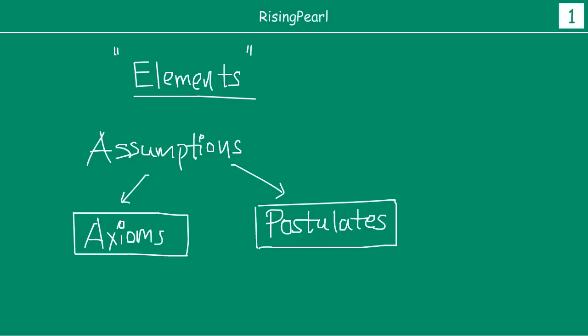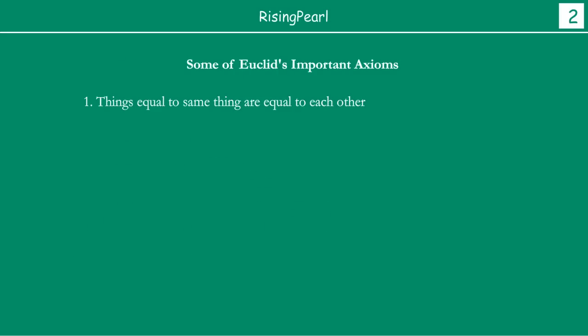Let's talk about some of the important axioms that Euclid outlined. The first one that he said was: things equal to the same thing are equal to each other. As we go through all of these axioms and postulates, you will see how simply things are written. And in the next series — series six, seven, etc. — we will see how Euclid's axioms and postulates relate to and apply to a lot of things that we know today.